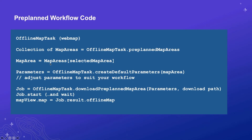In pseudocode, you create an offline map task pointing at the web map — at this point you're clearly connected to the network. You query it to find what the preplanned map areas are, pick one, and with the offline map task create a set of parameters for that specific area. You then create a download preplanned map area job by passing in the parameters and telling it where on the device you want the downloaded map to live. You start the job and when it's finished, you'll have a fully hydrated map to pass to your map view.